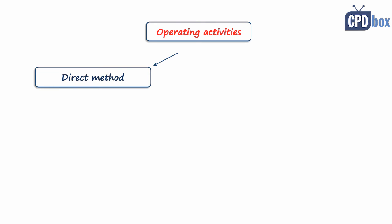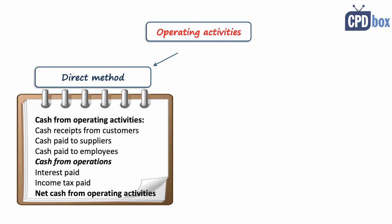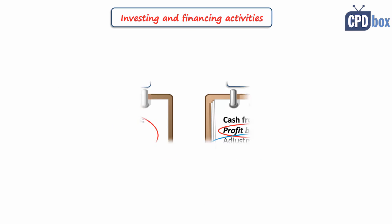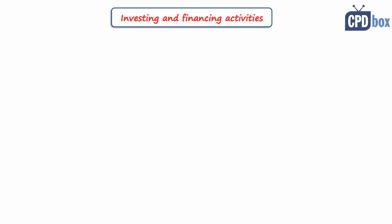There are two ways to report cash flows from operating activities. The direct method discloses major classes of gross cash receipts and gross cash payments. The indirect method starts with profit or loss before income tax and adjusts for non-cash items such as depreciation, deferrals, or accruals of past or future cash flows. You have the choice of either method. The indirect method may be easier, but the direct method provides more relevant information. Investing and financing activities are always presented the same way regardless of which method you choose.